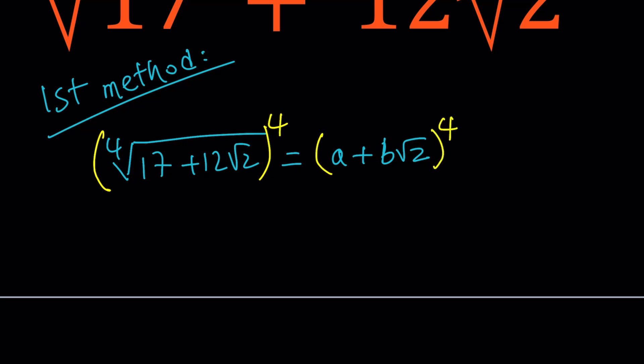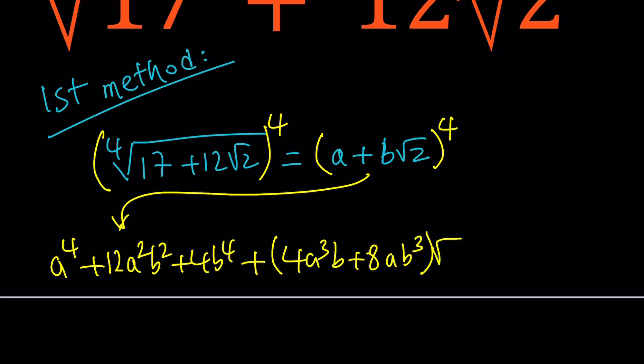And that's going to give me, we're going to get rid of the fourth root, 17 plus, and let's write the variable on the left-hand side. If you expand it, you're going to get something like a to the fourth plus 12 a squared b squared plus 4b to the fourth. And then there's going to be two coefficients for root 2. We're going to factor out the root 2 here to make our expression more organized. And this is going to equal 17 plus 12 root 2.